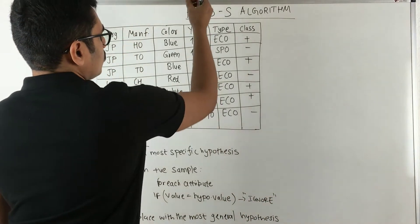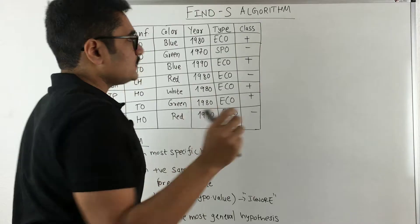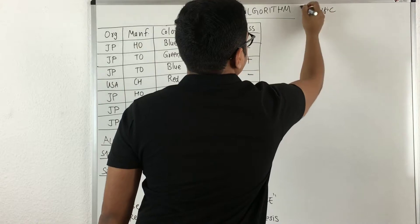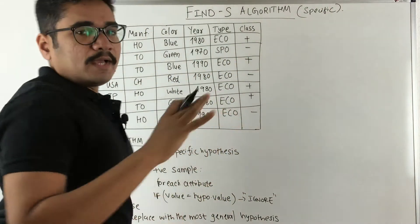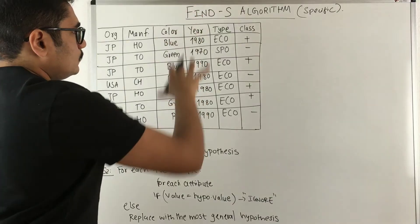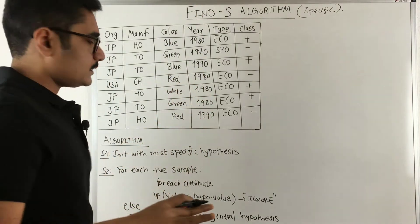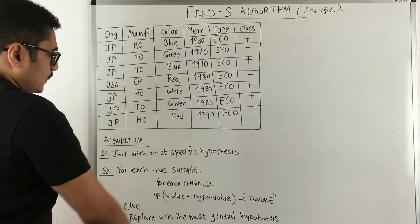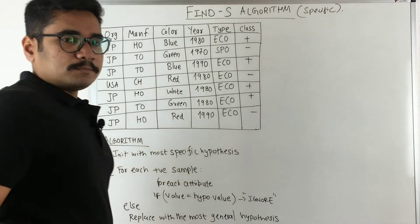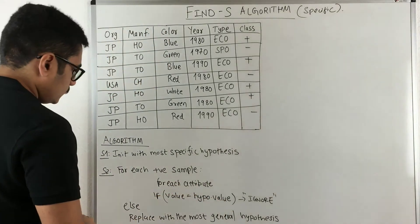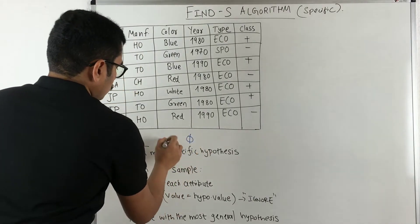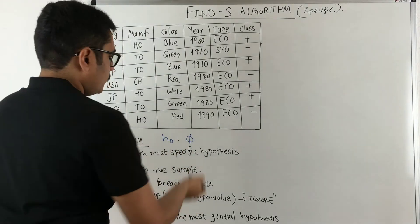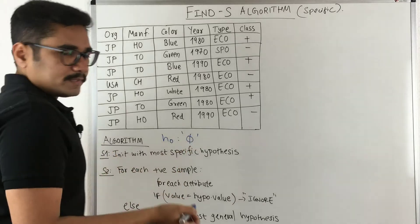First of all, the 'S' in Find-S stands for the most specific hypothesis. We have an algorithm to perform this on any given dataset, and it is very simple. The first step is to start with the most specific hypothesis, which is denoted by phi (φ). For example, we initialize hypothesis h0 by setting all attributes to phi.